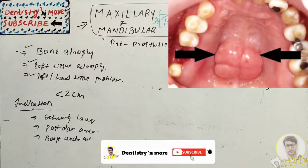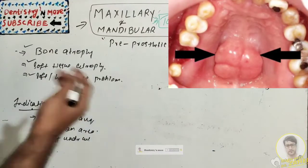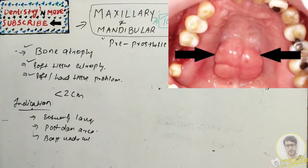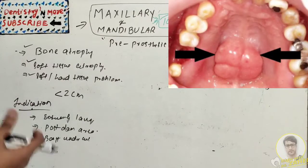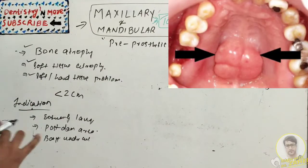Removal is also indicated if the tori interfere with function such as speech or deglutition. We can leave behind small tori which can be relieved during denture construction, but we need to remove large tori because of these indications.